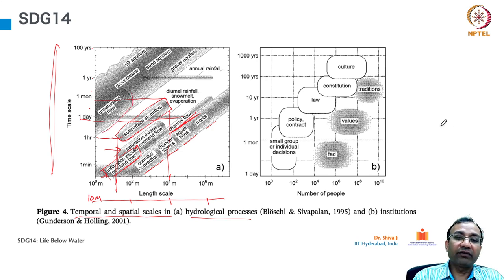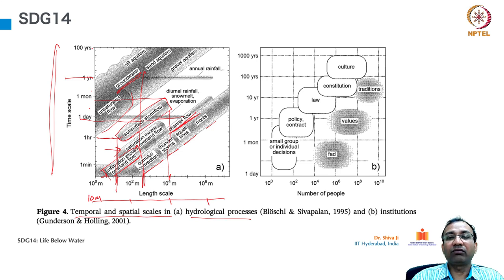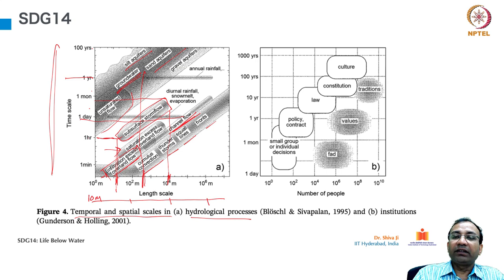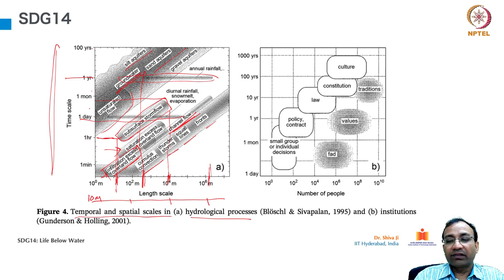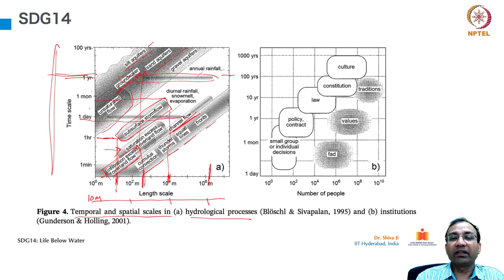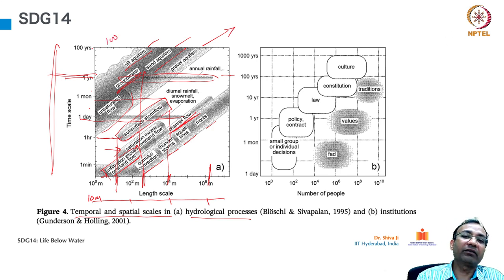Then we have unsaturated flow and groundwater — maintained at a scale of at least one year and at a length of 10 to the power 2 or more. Sand aquifers, even 10 to the power 4. Silt aquifers at 10 to the power 2 and plus. Annual rainfall: this pattern drawn here shows the length in which it takes place and in a cycle of one year. If it goes above that it becomes silt aquifer, sand aquifer, and gravel aquifer — living for a longer period, in a scale of 100 years or more.